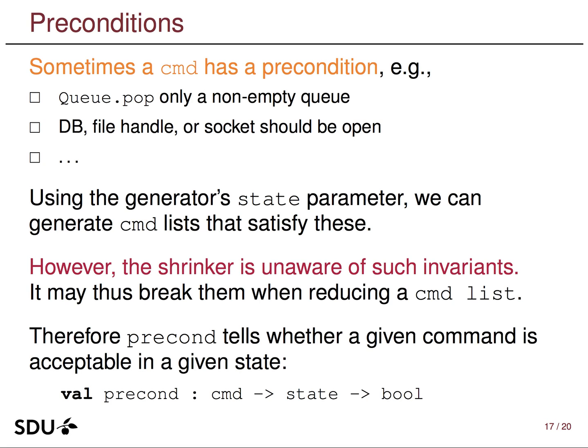Sometimes commands may have preconditions — for example, you only want to test a queue pop when there is something in the queue, or a database call requires an open connection as a precondition. Using the state parameter, if we model whether such a connection is open in the model, we can express that. However, once the shrinker kicks in it may break these invariants. Therefore, precondition is a hook to express whether a given command is acceptable in a given state, and the shrinker uses that.